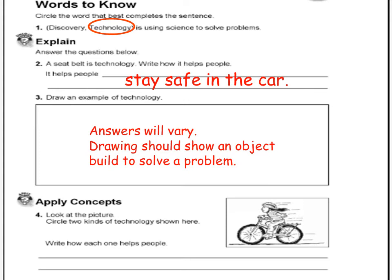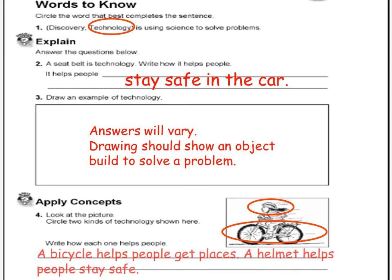Apply concepts. Look at the picture. Circle two kinds of technology shown here and write how each one helps people. Look at the picture, students — helmet, bicycle. What do you think? How does a bicycle help people? A bicycle helps people get places. How about a helmet? A helmet helps people stay safe.